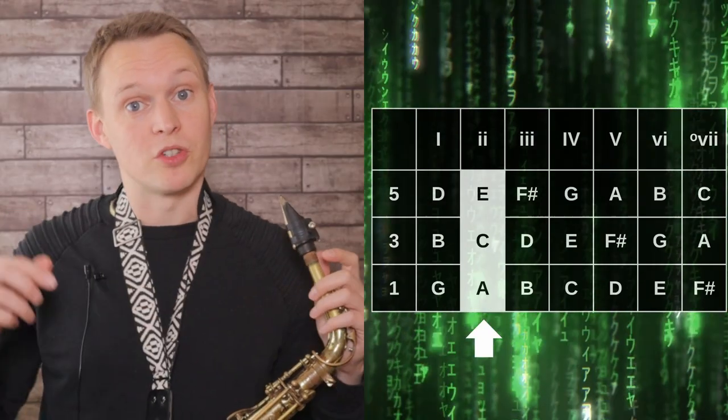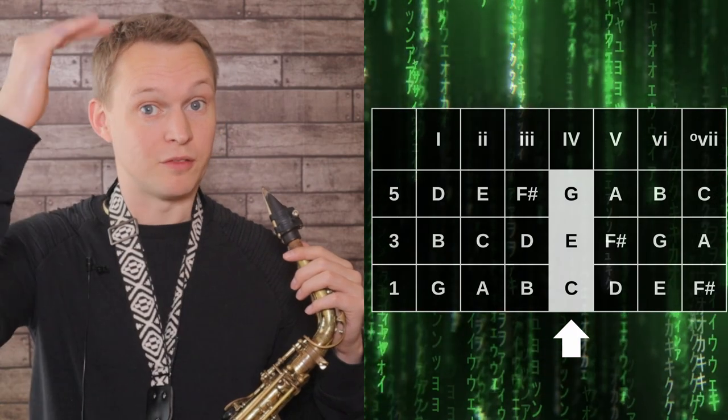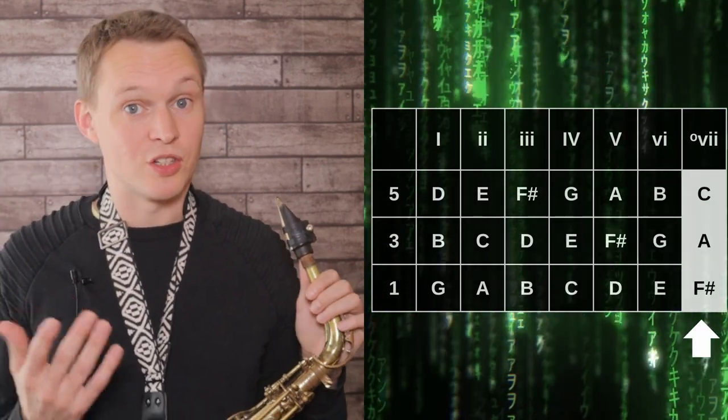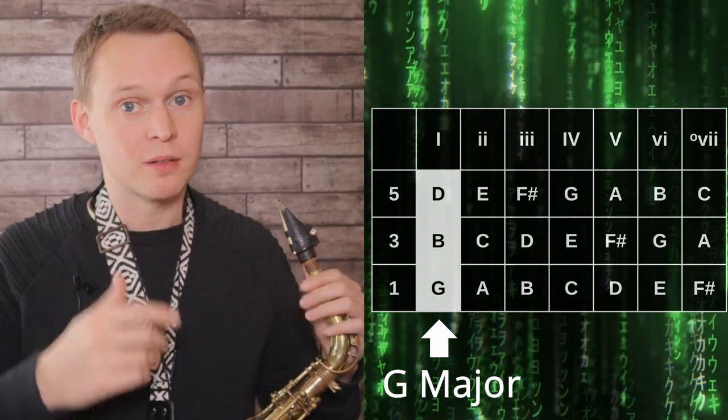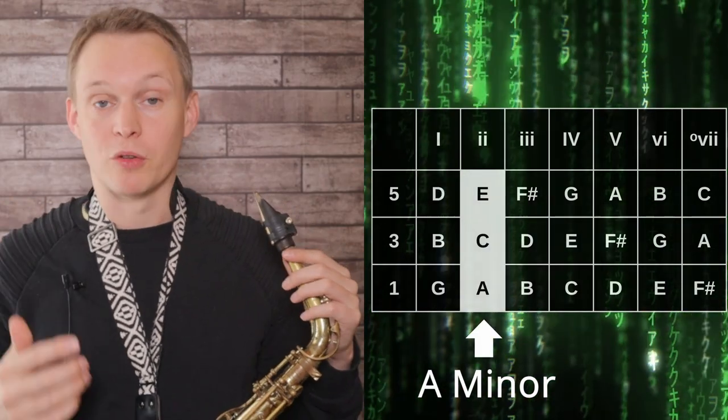Now for the first part of the workout, what we're going to do is play up each of those columns playing the first, third, and fifth. Now this is a really common pattern and it's a great way to start out the workout. As you're playing up each of those columns as well, you can also try to hold in your mind what's the name of that triad you're playing. So for example on the first one you're thinking G major, and then when you're on to the second column you're thinking A minor. All right, so you can grab your sax if you want, have a go at playing along. Here's the first exercise.